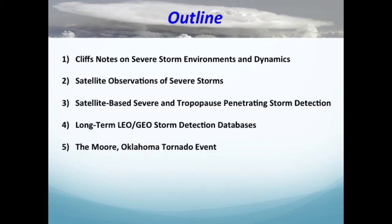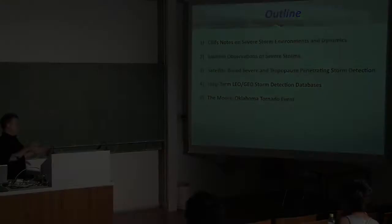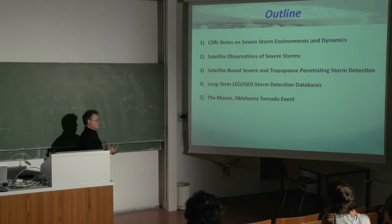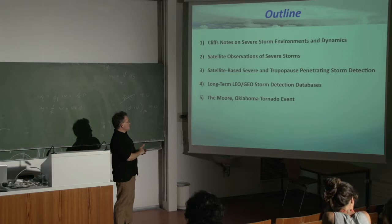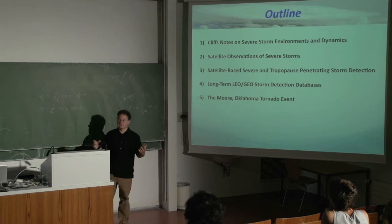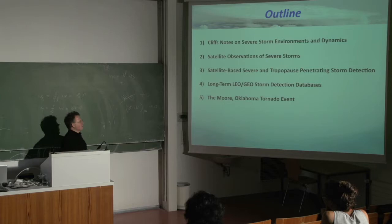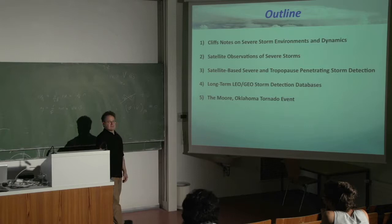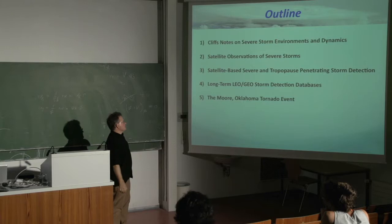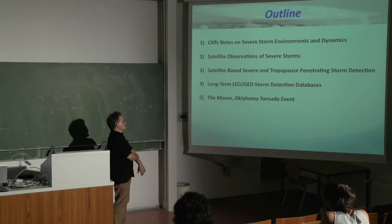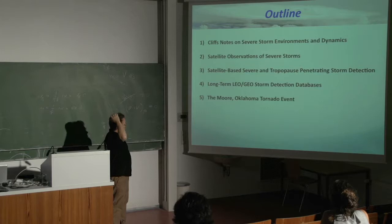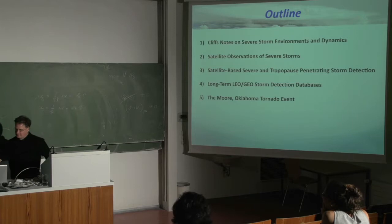The outline of the talk covers: short notes on severe storm environments and dynamics, to get a sense for what satellite observations are really telling us — they have to fit into some schematic model. Then satellite-based severe and tropopause-penetrating storm detection, overshooting tops and what you can do with that information, long-term storm detection databases including a 15-year AVHRR record to build a pseudo-climatology, and a quick look at the Moore Oklahoma tornado event from an overshooting top perspective.